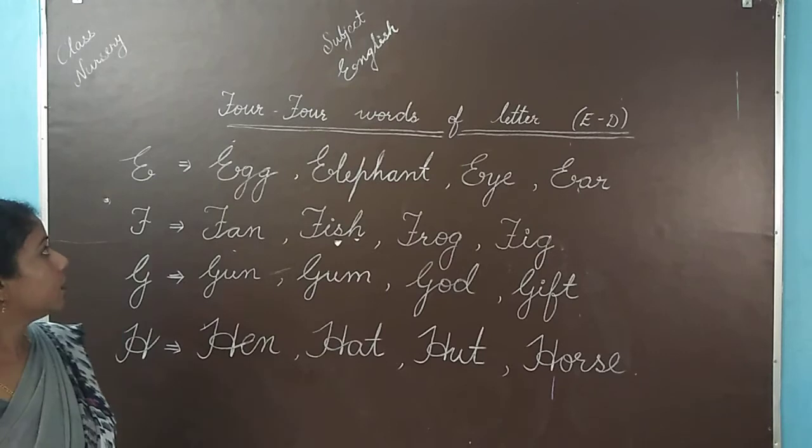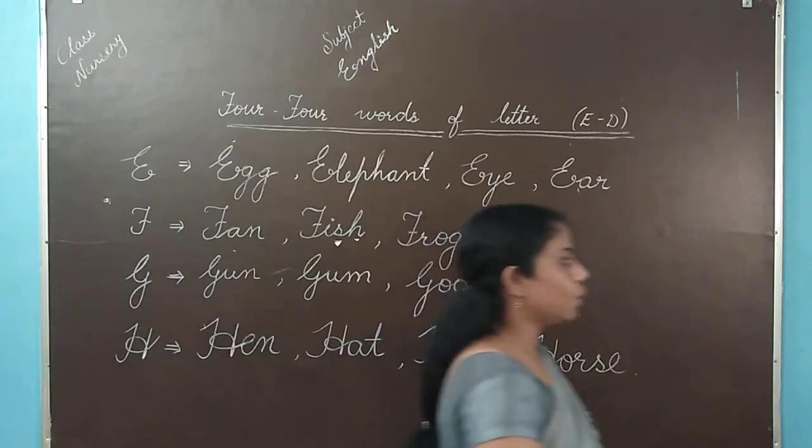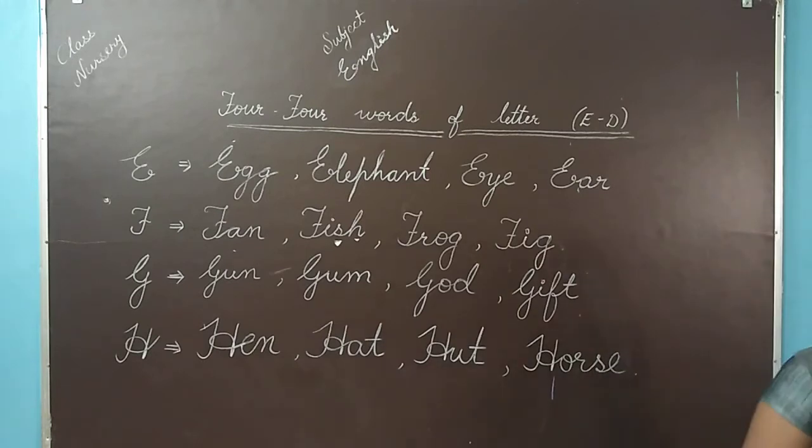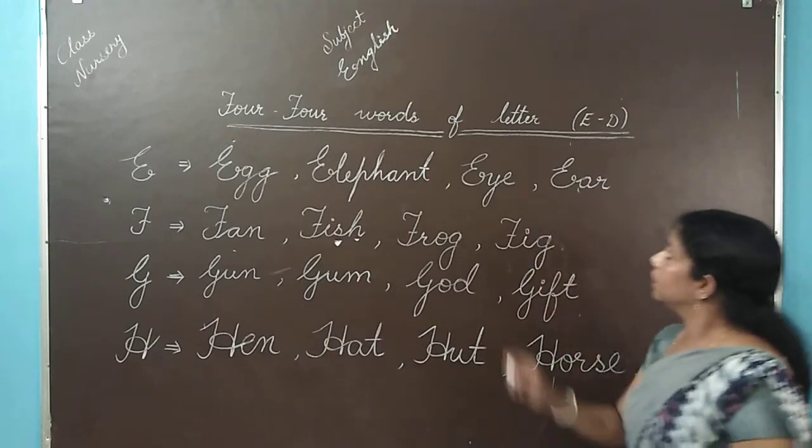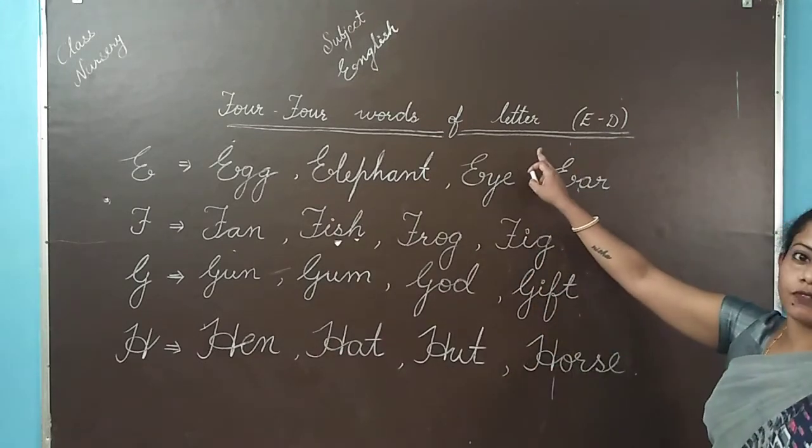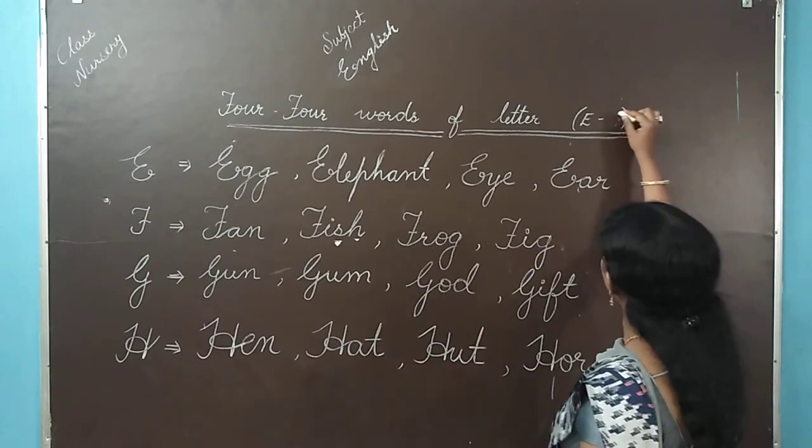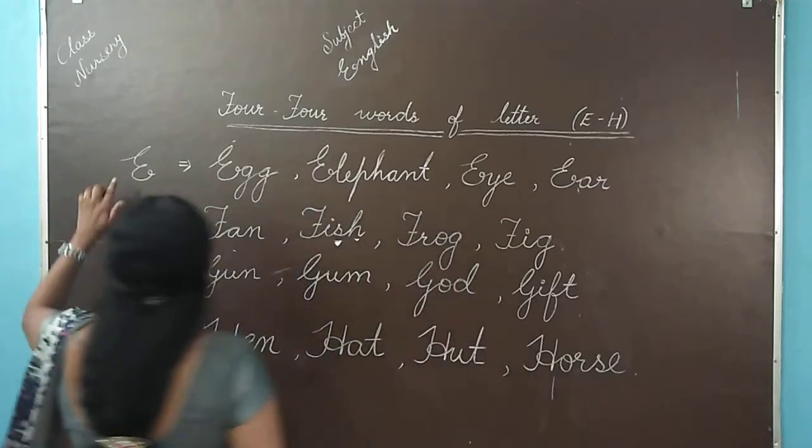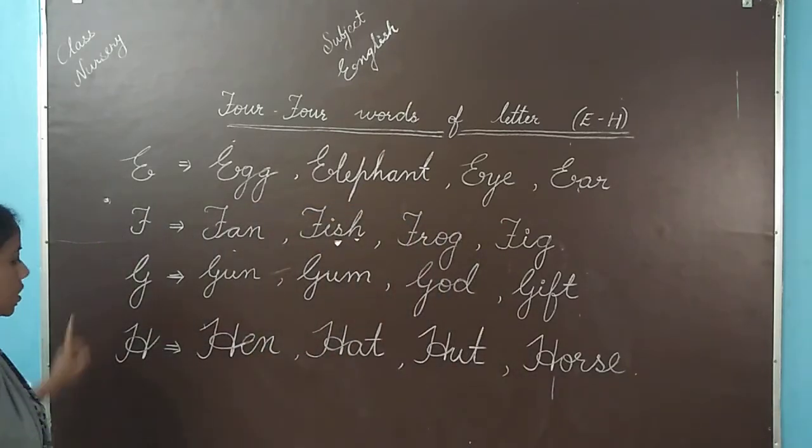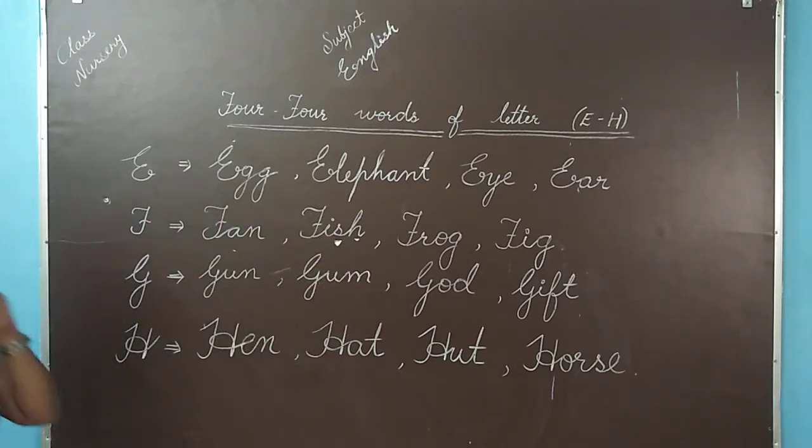Students, in the last video of English, we have learnt 4 words of English alphabet A to D. Now today we are going to learn 4 words of letter E to H. E, F, G, H. 4 letters and 4 words starting from each letter. So let's start.